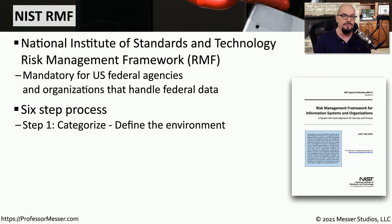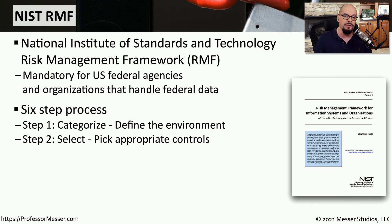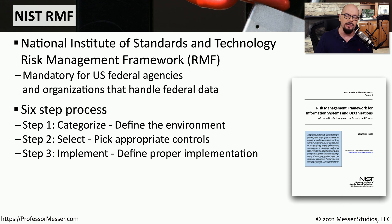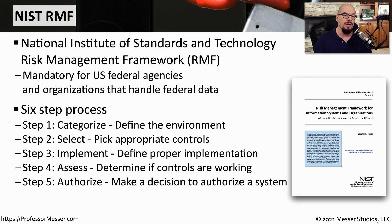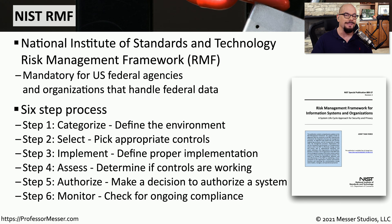This framework has six different steps to follow in the system lifecycle. The first step is to categorize or define the environment you're working in. The second is to select appropriate controls for security and privacy. The third is to implement or define the proper implementation of these policies. The fourth is the assess step — to determine if the policies you put in place are actually working properly. The fifth is the authorize step, where you make a decision to authorize a particular system. And the sixth step is to constantly monitor to ensure that you are still in compliance.